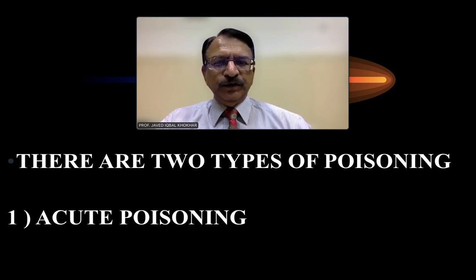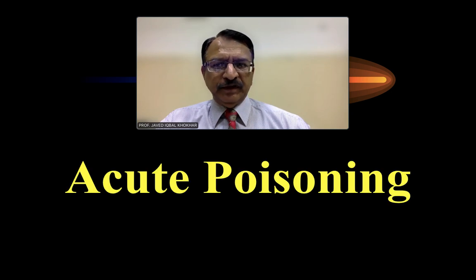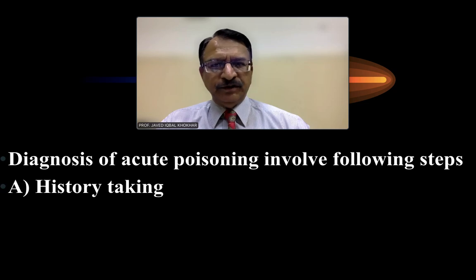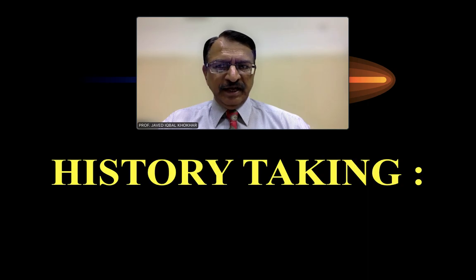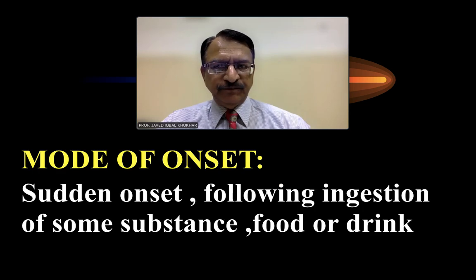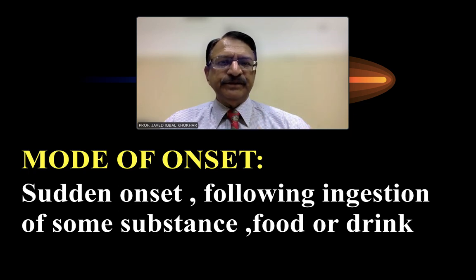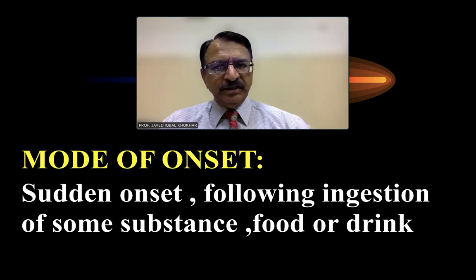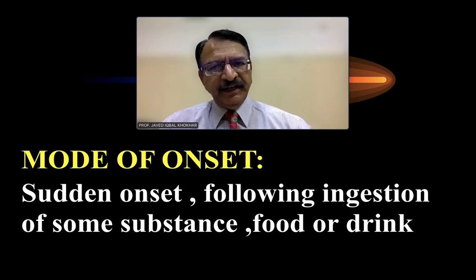In acute poisoning, diagnosis depends upon the history, examination of the patient, and lab investigation. Regarding history, the mode of onset is important because in acute poisoning the onset is sudden — it may occur after ingestion of some food, substance, or drink. The person is perfectly alright and healthy, but suddenly symptoms appear upon ingestion of something.